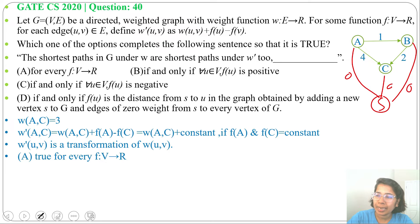If we take AB edge, then W'(A,B) will be W(A,B) is 1 plus F(A) is 0 minus F(B) is 0. So we got 1. W'(A,B) is same as W(A,B). That's why here I have written W'(u,v) is just a transformation of W(u,v).